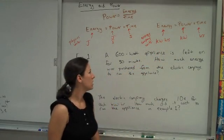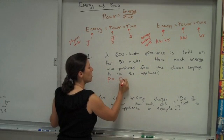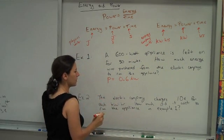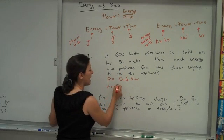So for power, instead of 600 watts, I'm going to write 0.6 kilowatts. And for time, instead of 30 minutes, we're going to convert back to hours. That's half an hour.